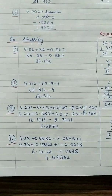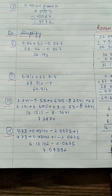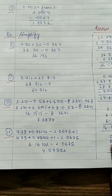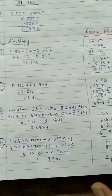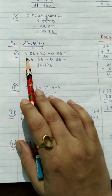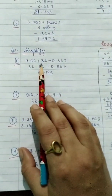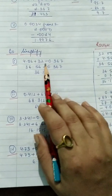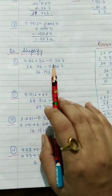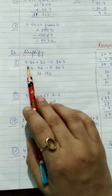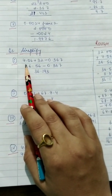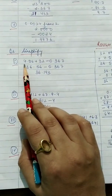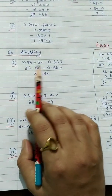Hello children, in this video we will discuss questions 3 onwards of Exercise 6.2. Question number 3 is: simplify 4.56 plus 32 minus 0.367. Whenever this type of question is given, first of all we will write the positive terms together and negative terms together. So here positive terms are 4.56 plus 32.